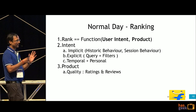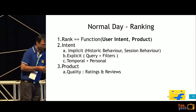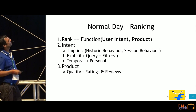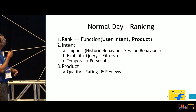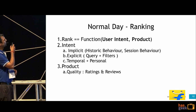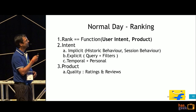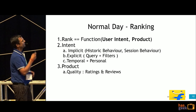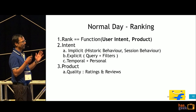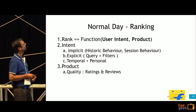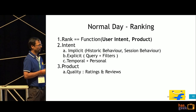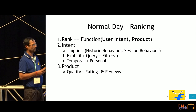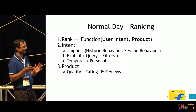This is what was happening. On a normal day, the ranking is based on user intent and how good the product is. User intent can be implicit — historic behavior, session behavior — or explicit, like queries and filters that have been selected. On the product side, you mostly have product quality: ratings, reviews, and catalog items.